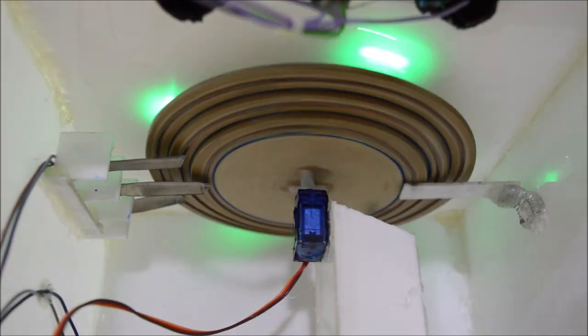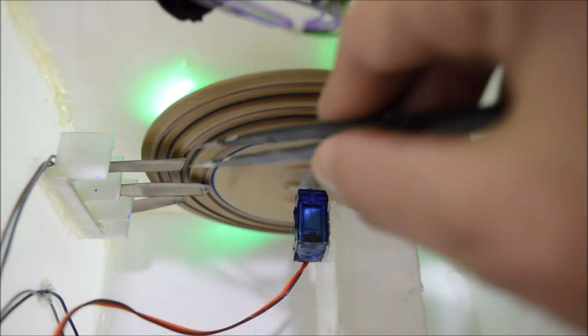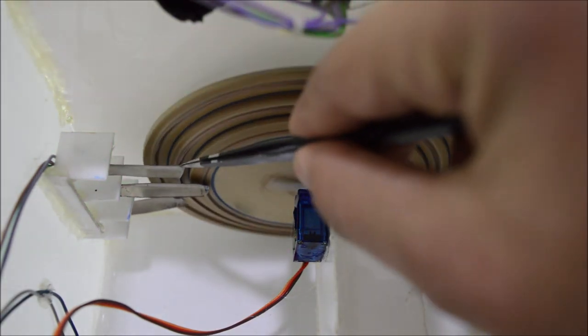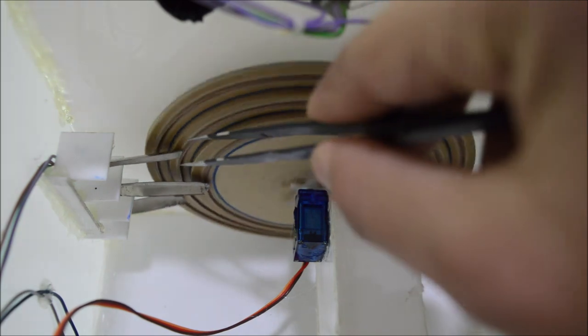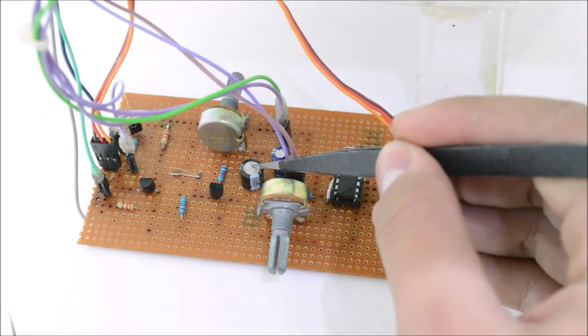Now these springy things glide over three rings of copper wire to supply the positive and negative voltage to the LEDs and also to get the signal from the reed switch. Now let's talk about the circuit itself.